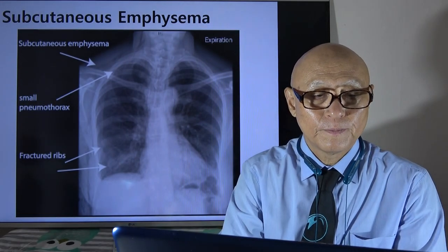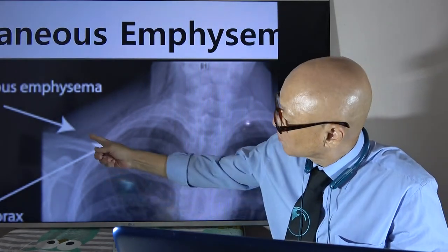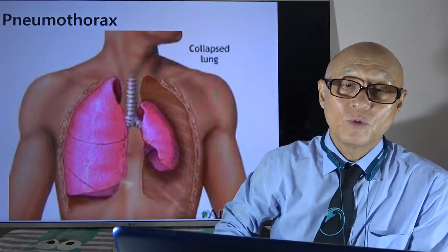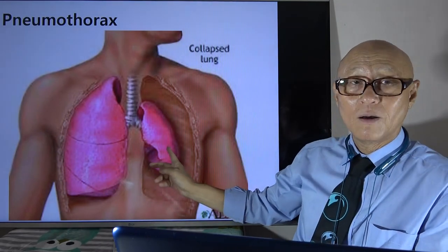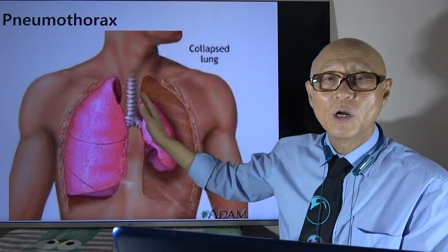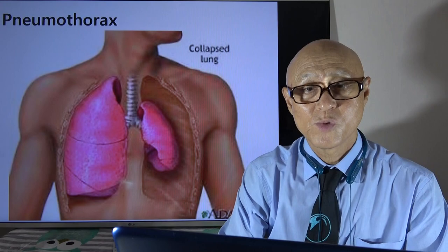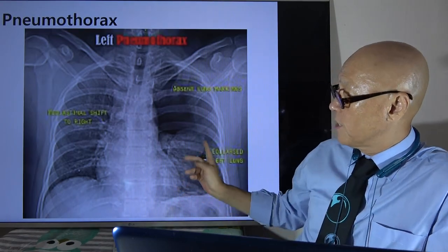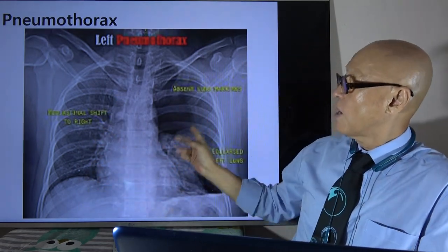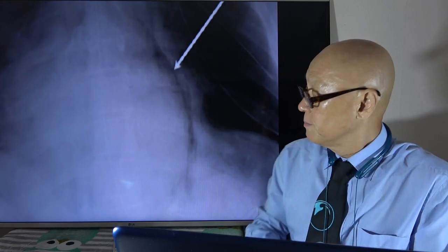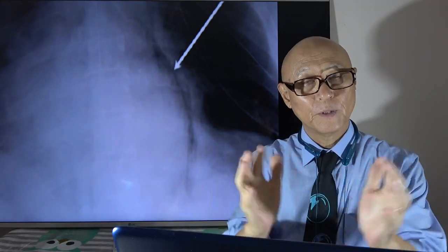Here we can see some air right here under the skin of the shoulder — this is subcutaneous emphysema. When you have pneumothorax, one lung collapses because of the high pressure of air trapped in the pleural cavity, and you cannot breathe well at all. This also shows air surrounding the pleural cavity. Mediastinal emphysema — look at this air circling your heart. When there is a lot of air there, your heart cannot pump.